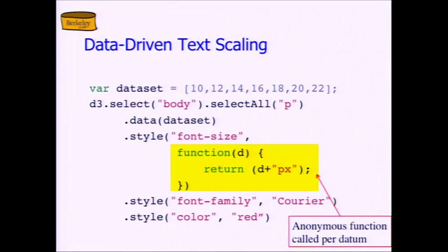What we saw in the code just a minute ago didn't say anything about what to do with the data — it said apply the data function, which is really just an inner join. It's just a basic join. The default is join on position: the first element in the data set is joined with the first element in the DOM selector. So the inner join of those two things by position is what you get out of data. But you also get handles to get the left outer and right outer join tuples.